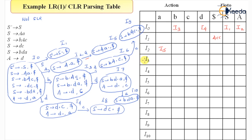i3 on input capital A goes to i6. i3 on input D goes to i7. i4 on input C goes to state i8. i5 is a reduced state — I'll come back. i6 on input small c goes to state i9. i7 on input small a goes to state i10. i8 is a reduced state, i9 is a reduced state — I'll come back to these.